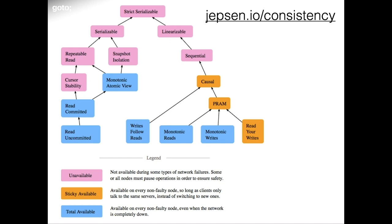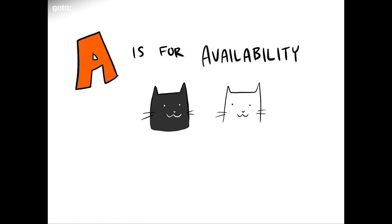There are a lot of different ways to talk about consistency. Kyle Kingsbury, who writes the Jepsen.io blog, mapped out all the different definitions of consistency and what they each logically imply. I highly recommend checking out this post — I've read it three times and my brain still hurts. The takeaway I want you to have is that consistency is not a binary state; there are lots of degrees of it, and we have to be really careful about which one we actually need and which one we build for.